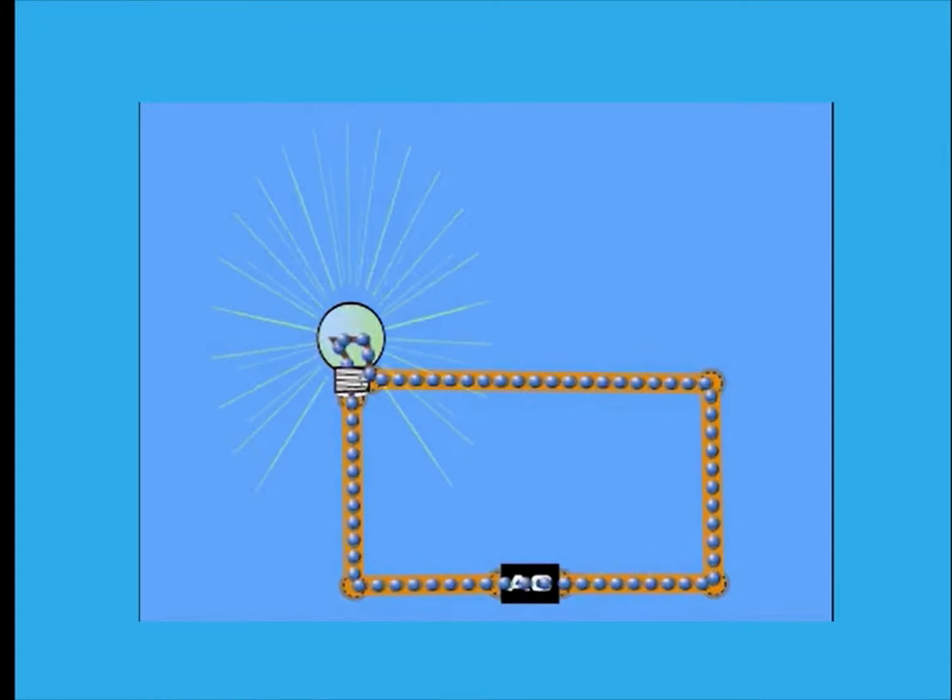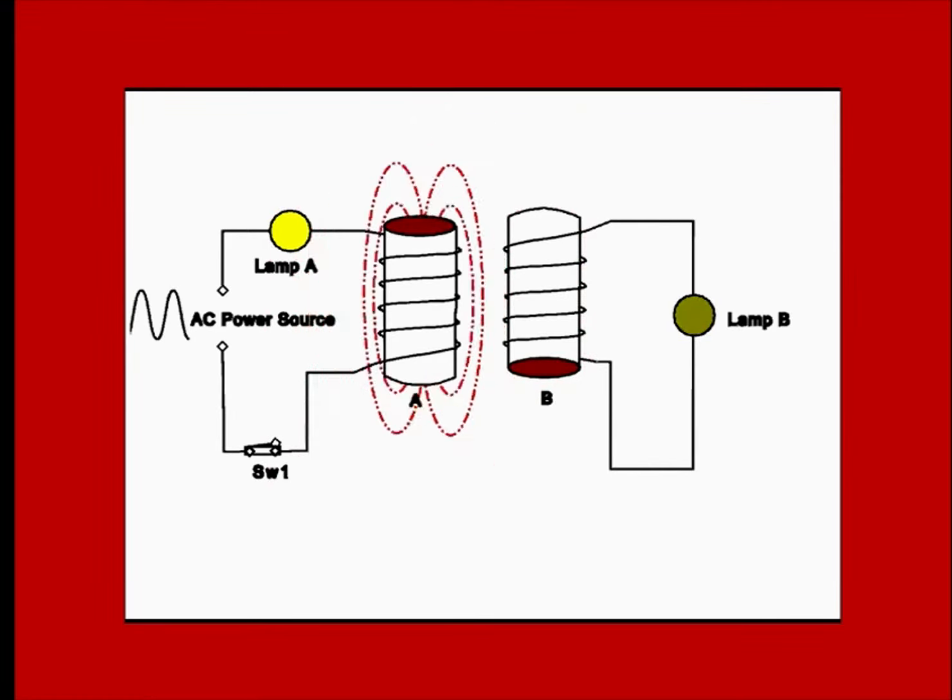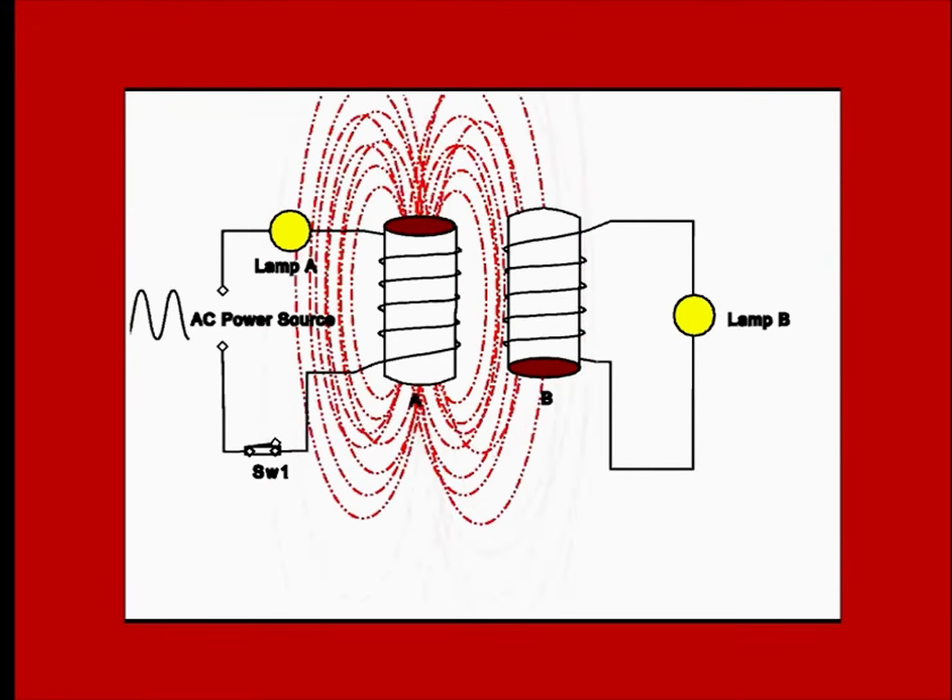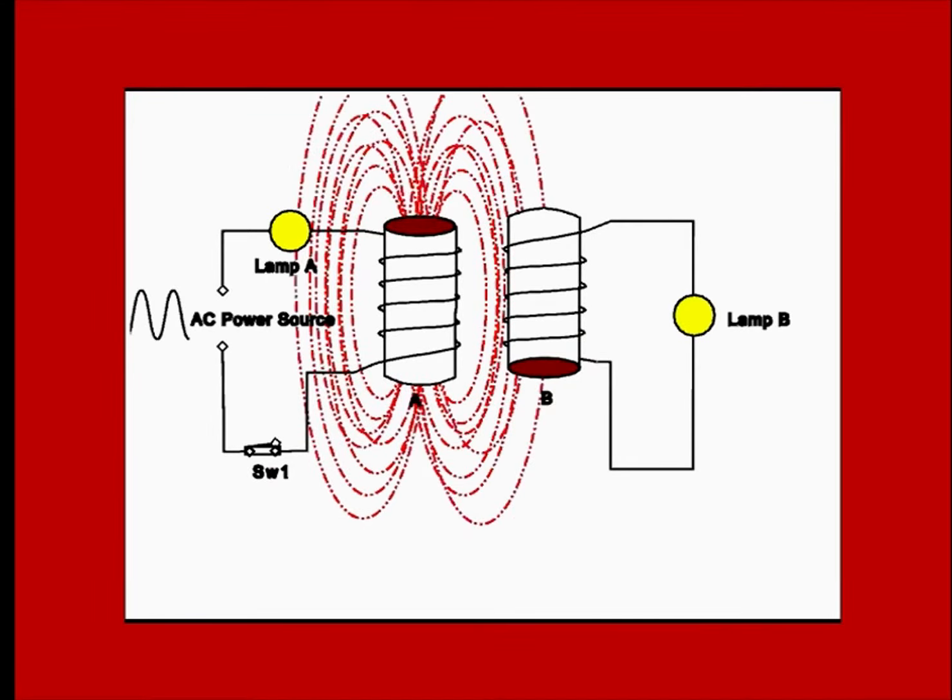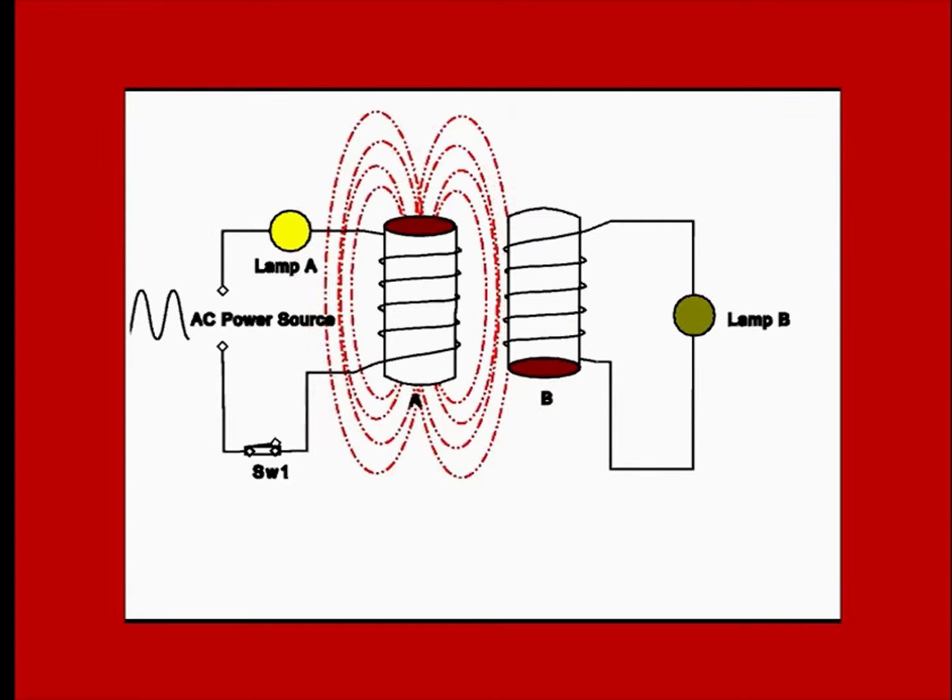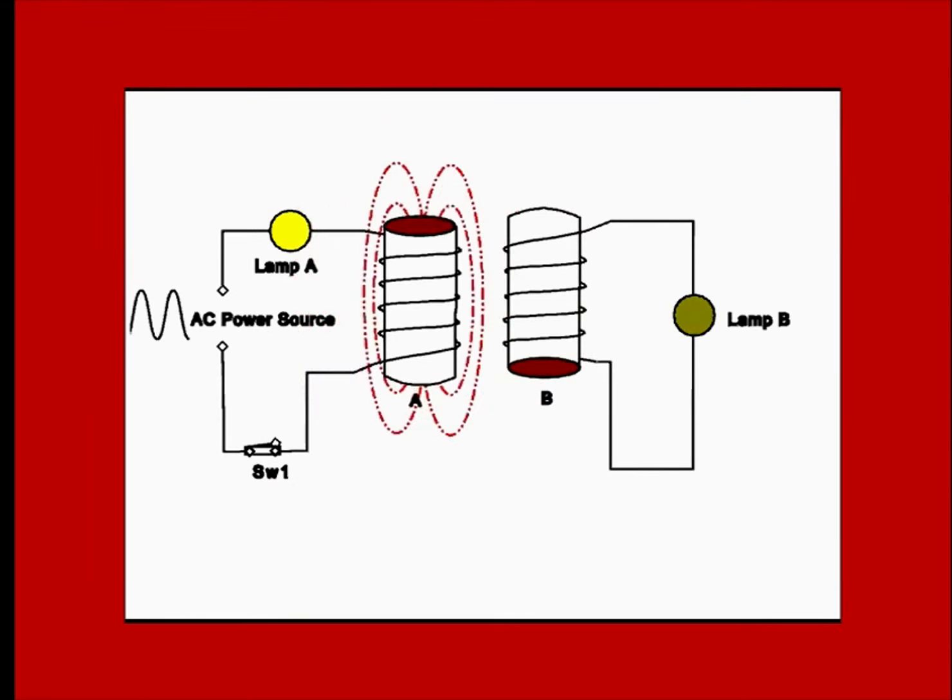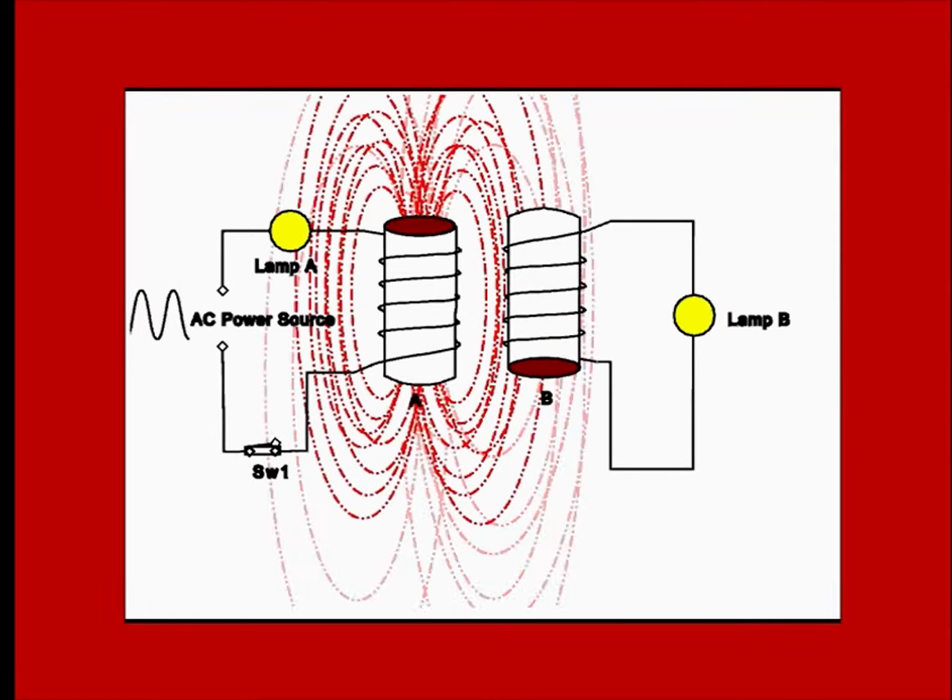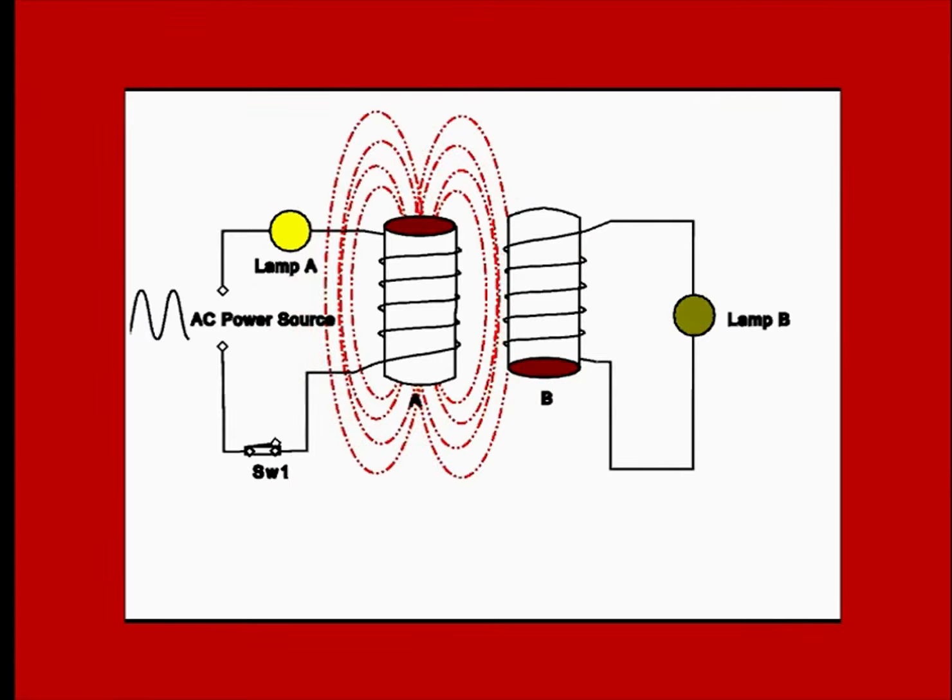Now, when this AC current is passed through a conductor, then the electromagnetic field produced is constantly growing and shrinking as the current is AC. This growing and shrinking of magnetic field acts as a changing magnetic field to another conductor placed near it. You know, changing magnetic field produces current and the current is generated in the other conductor and hence the lamp B is glowing.